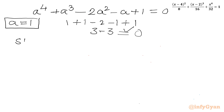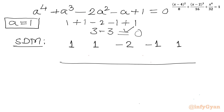Now I will use synthetic division. The coefficients of the quartic a⁴ + a³ - 2a² - a + 1 are: 1, 1, -2, -1, 1. Using root a = 1: bring down 1, multiply to get 1, add to get 2, multiply to get 2, add to get 0, multiply to get 0, add to get -1, multiply to get -1, add to get 0. The resulting cubic coefficients are 1, 2, 0, -1.